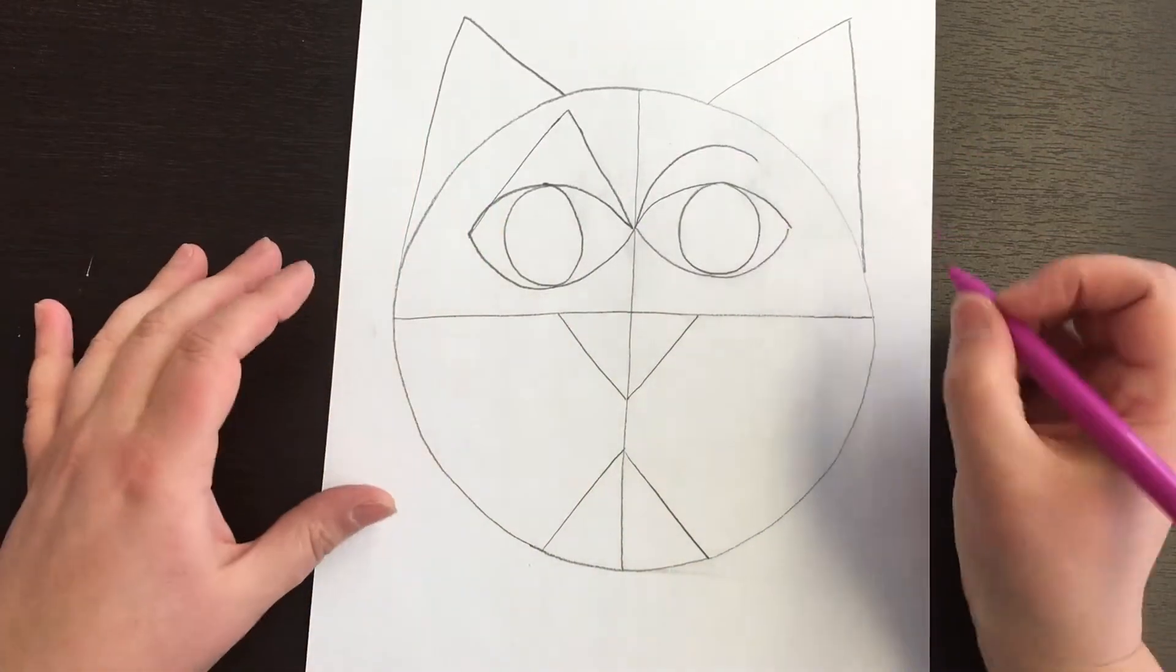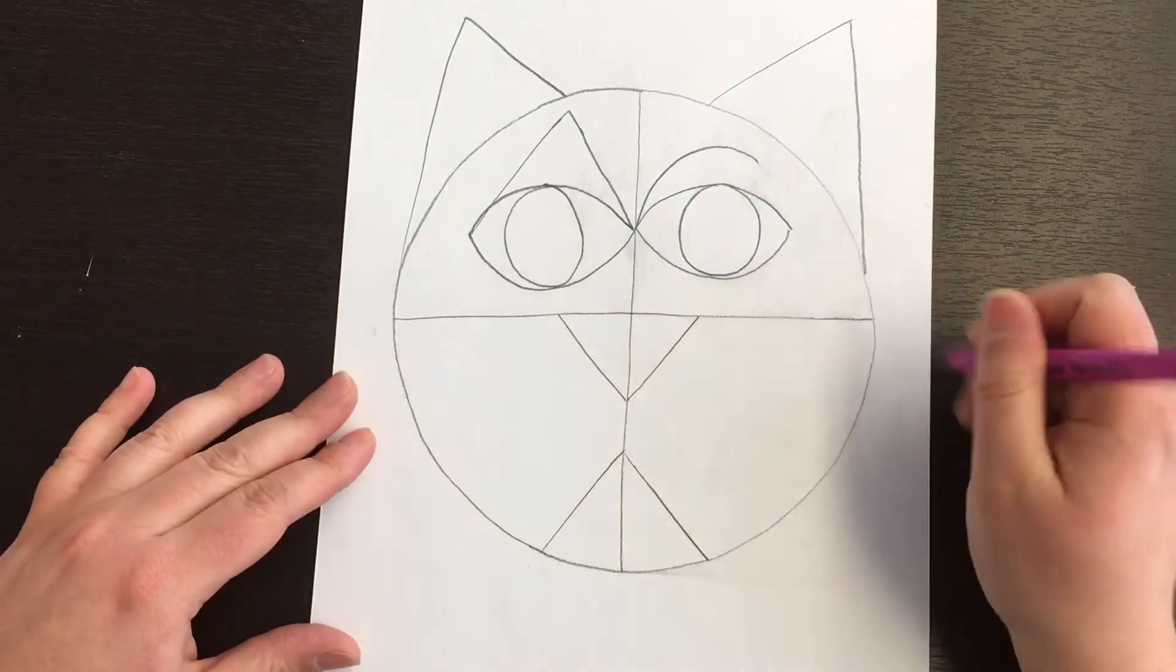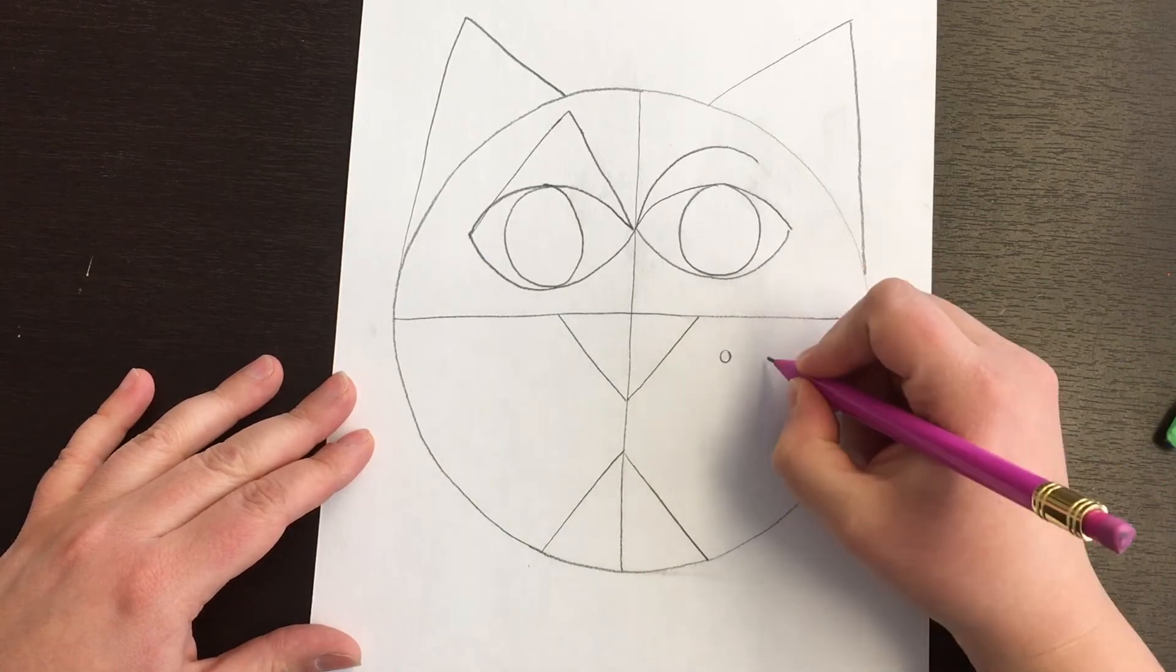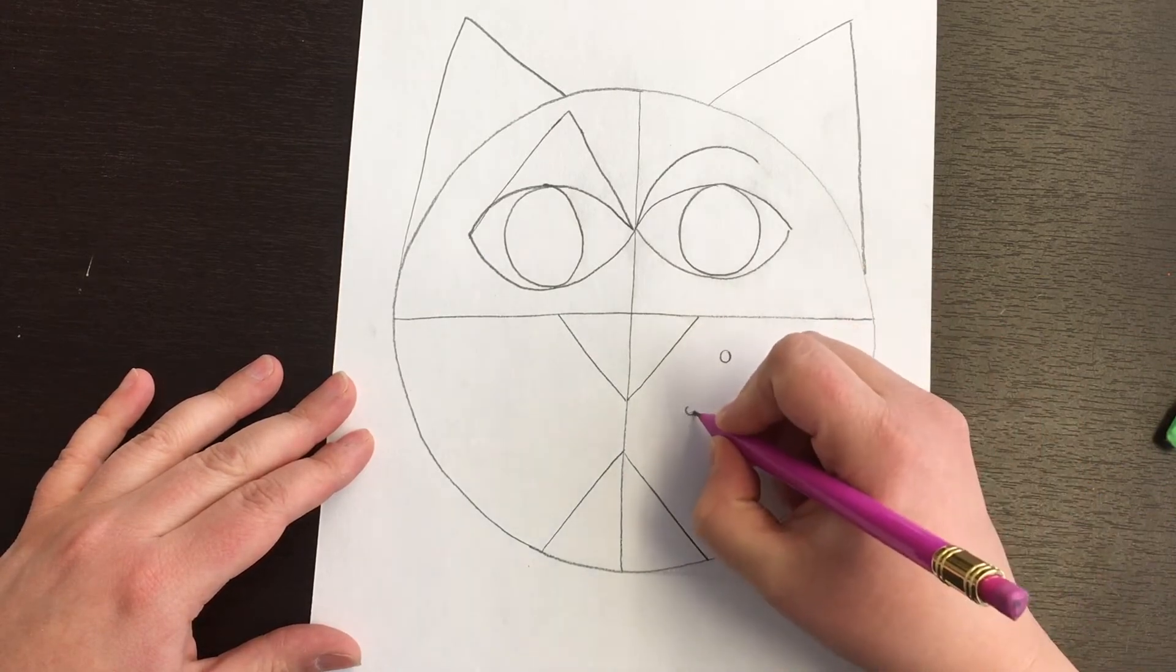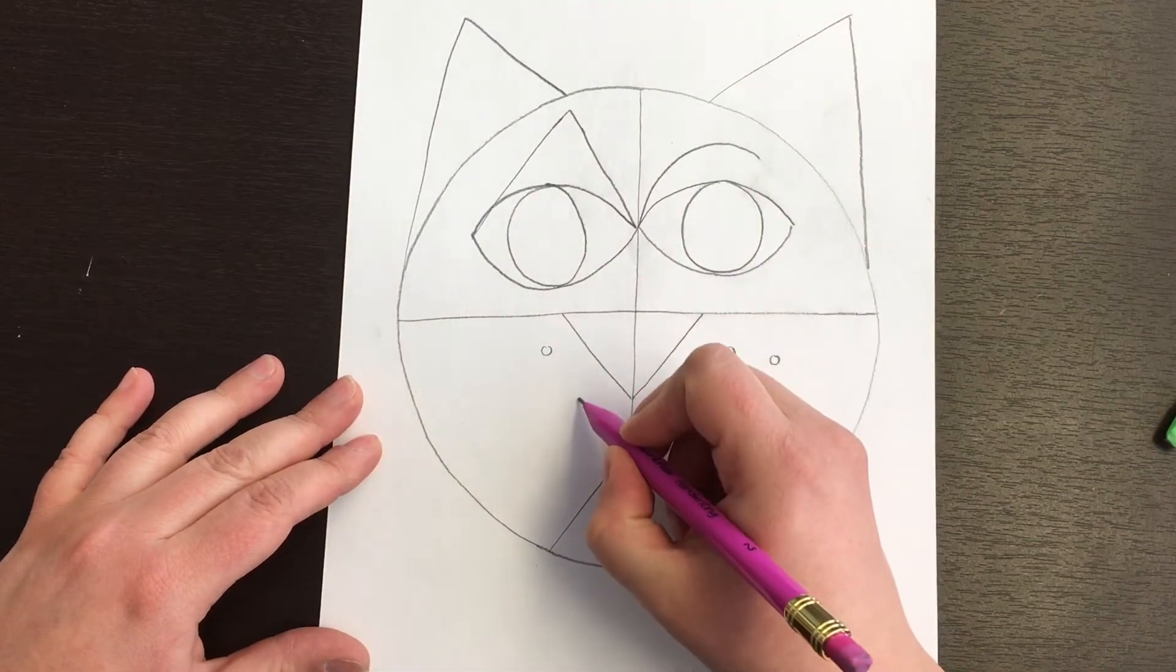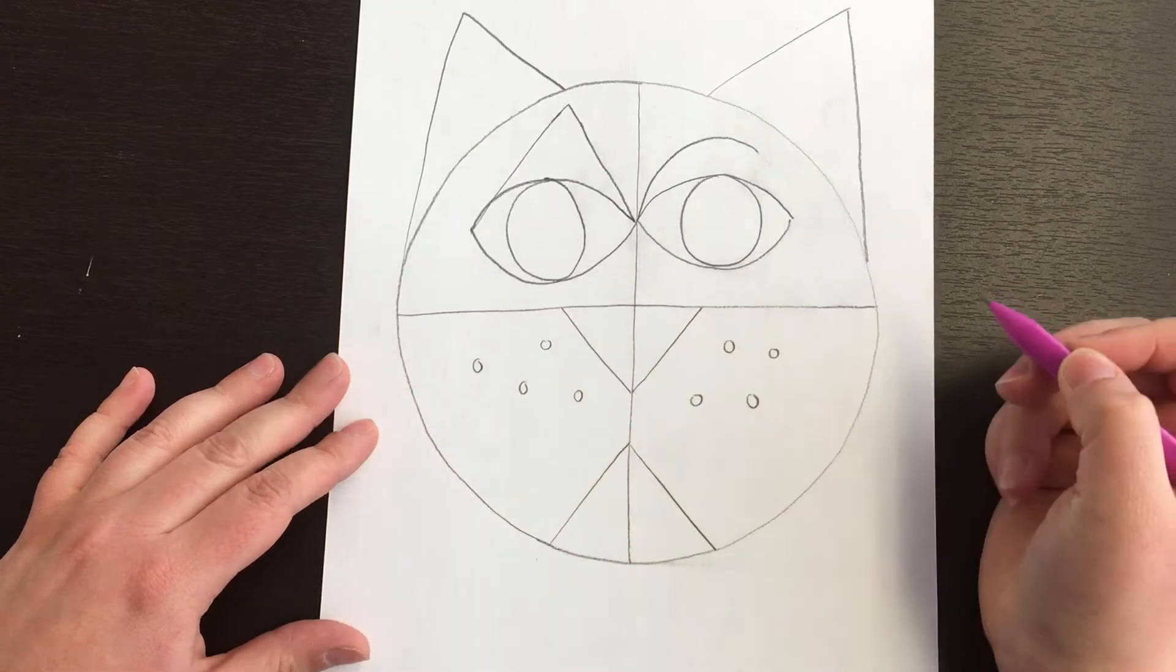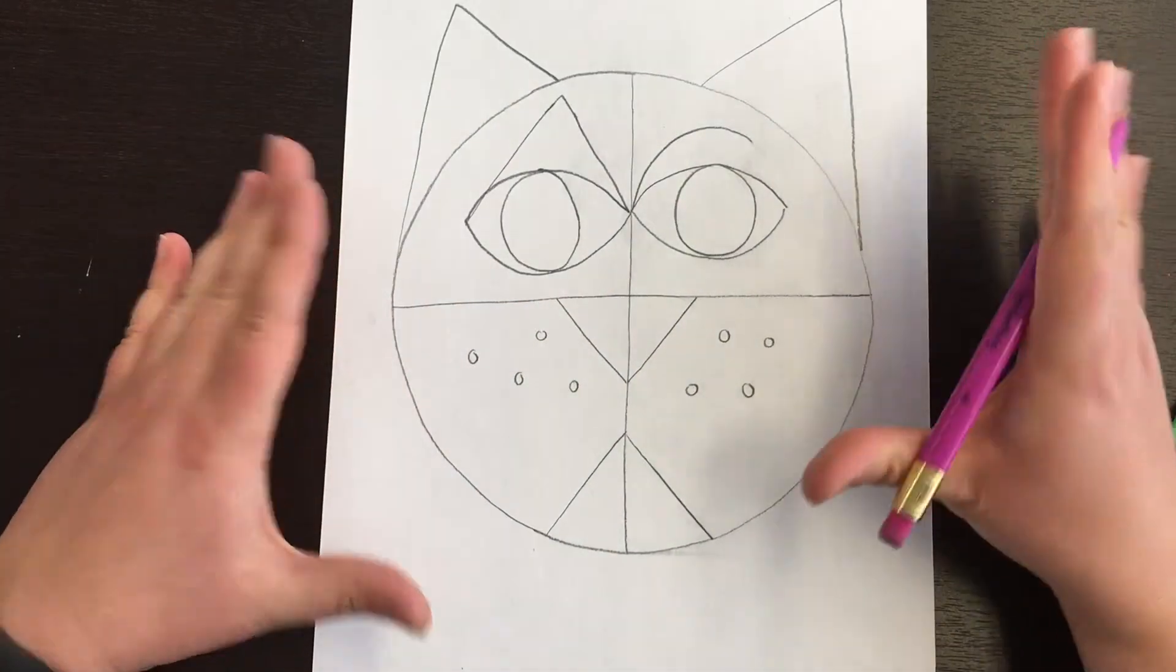And then the last thing we're gonna add to the face is, if you've ever looked at a cat's face, sometimes you can see the little dots where their whiskers are. We're not gonna actually draw in the whiskers, but we're gonna drop in some little circles, just to kind of hint at the fact that there might be whiskers there. So somewhere between three to five dots is good. And so the head part is done.